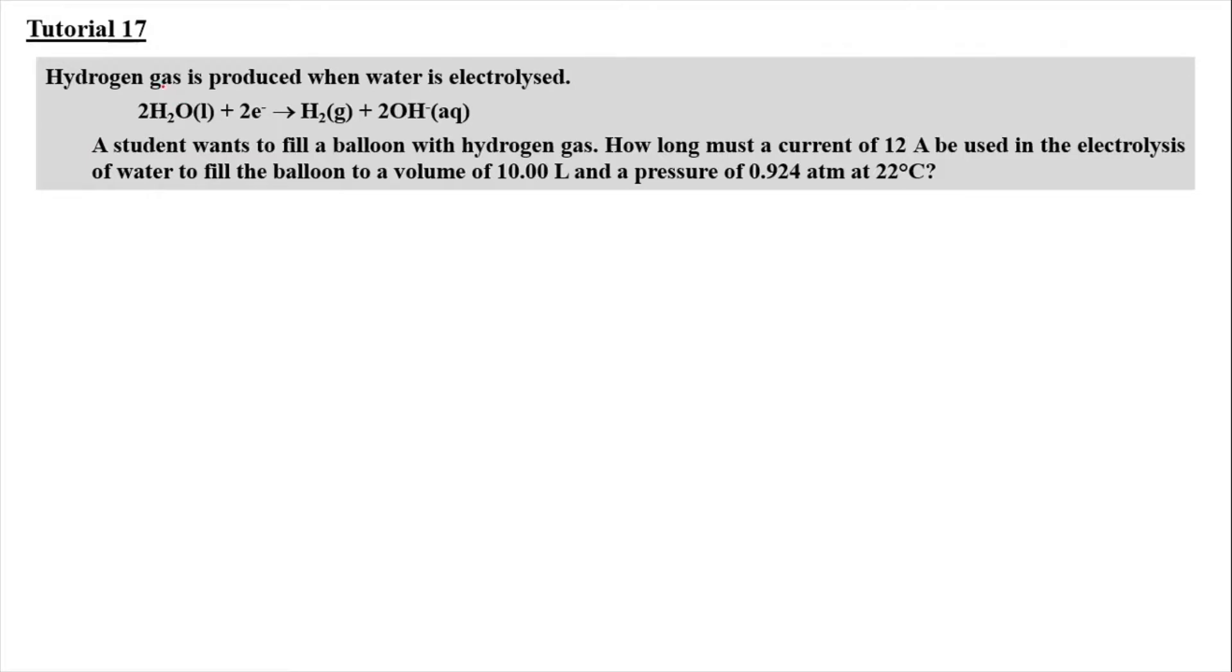Now we move on to the next question, which is tutorial question 17. Hydrogen gas is produced when water is electrolyzed. 2 H₂O liquid plus 2 electrons produces hydrogen gas and 2 hydroxide aqueous ion. So this is the reduction of water. A student wants to fill a balloon with hydrogen gas. How long must a current of 12 ampere be used in the electrolysis of water to fill the balloon to a volume of 10 liter and a pressure of 0.94 atm at the temperature of 22 degrees Celsius. Temperature here needs to be converted into Kelvin. As usual, we have to find the number of mol first because we need to compare the number of electrons that we have and the number of mol that really take part in the reaction. So PV is equal to nRT. So n equal to PV over RT.